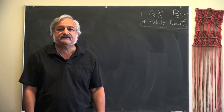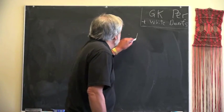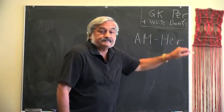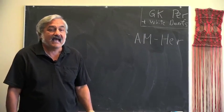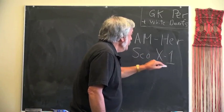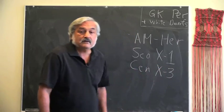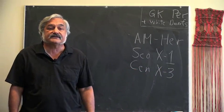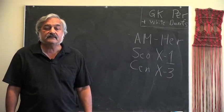Thus, we had a mixture of names such as AM-Her, where Her is short for the constellation Hercules, and SCO X-1 or CEN X-3, where SCO stands for Scorpio and CEN indicates Centaurus.